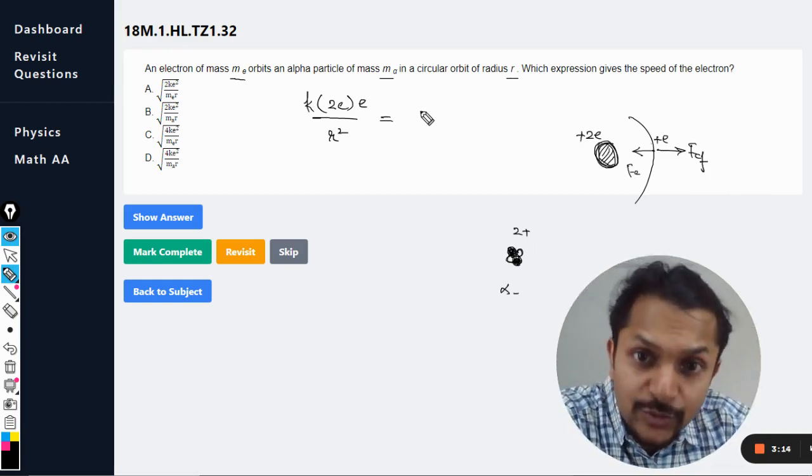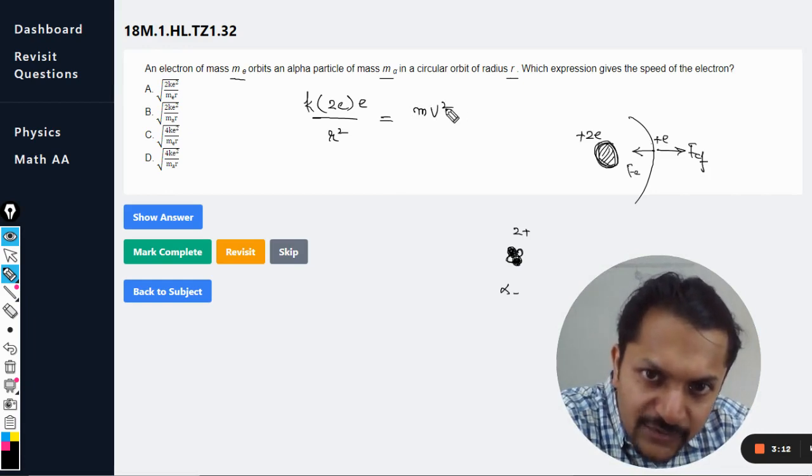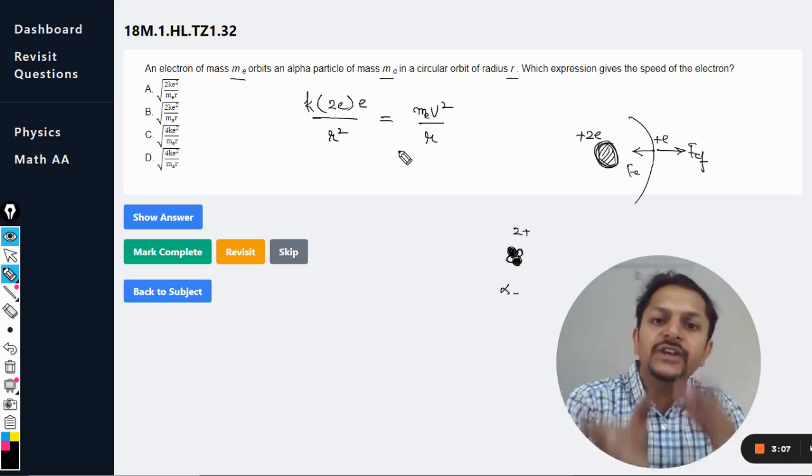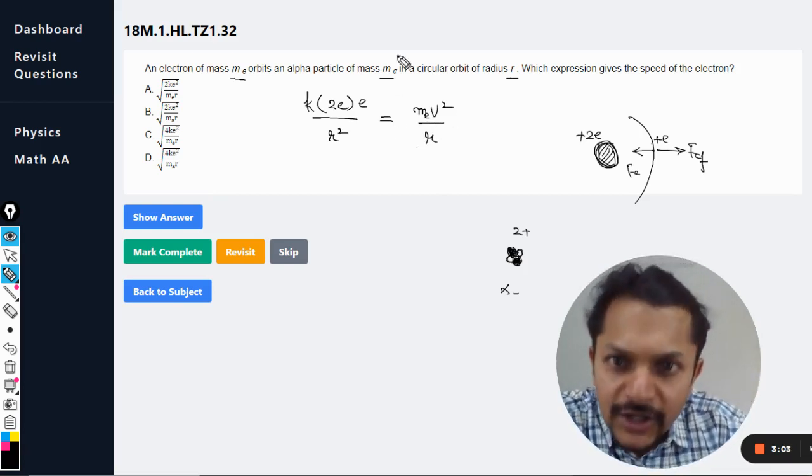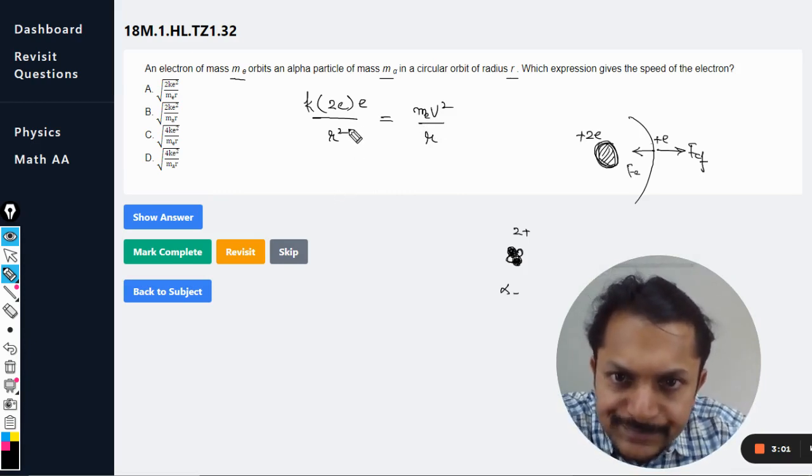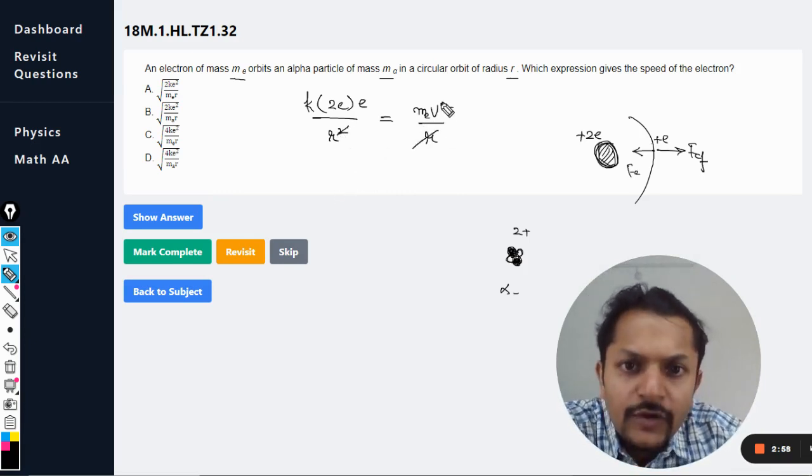Without centripetal force the electron will not be able to move in a circular orbit. So if it is a circular orbit there has to be a centripetal force. That is why we can just compare it: mv squared by r, where m is the mass of the electron, not the alpha particle. It is the mass of electron.